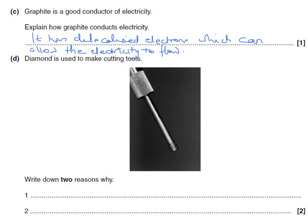Diamond is used to make cutting tools — give two reasons why. The first reason is it's hard, and the second reason is it has a high melting point.